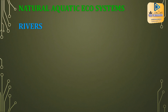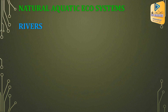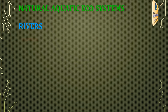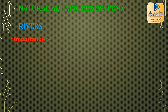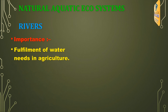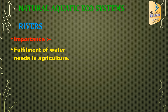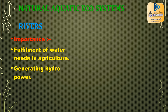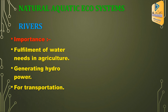First about natural aquatic ecosystems. The importance of river soil includes: fulfillment of water needs in agriculture, generating hydropower, and use for transportation.